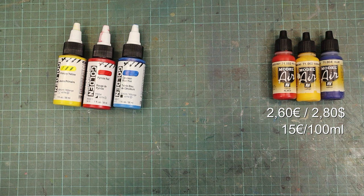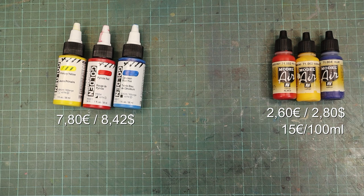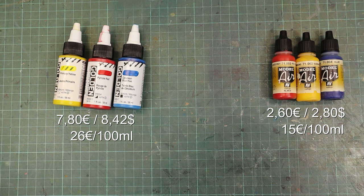On the other hand, as a US-based company, golden acrylics are priced at approximately 7 euro 80 cents for a 30 milliliter bottle, equivalent to 26 euros per 100 milliliter. Almost double the price.